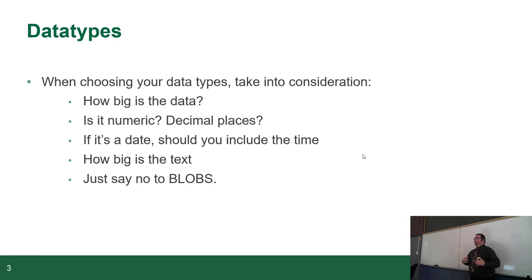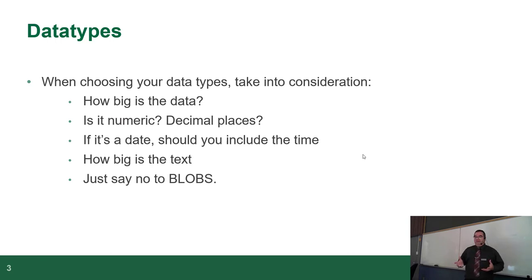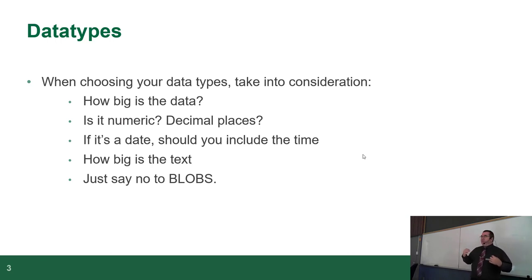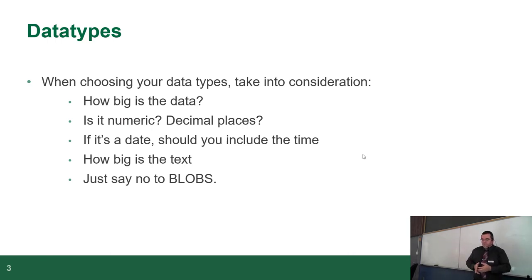One of the first things you encounter in physical design is data types. This whole term we haven't really talked about them — we're on week four, lecture three. Choosing data types in databases is more precise than in Java, because databases actually enforce size limits. Key questions to ask: How big is this data? Is it numerical? Does it have decimal places?